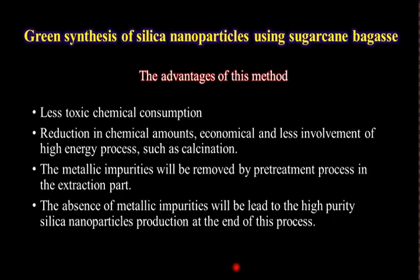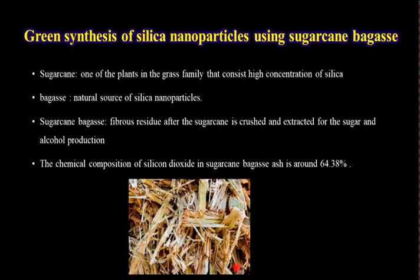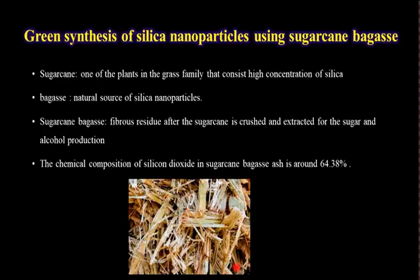The absence of metallic impurity will lead to high purity silica nanoparticles production. Sugar cane bagasse is one of the plants in the grass family that consists of a high concentration of silica, and it is chosen as a natural source of silica nanoparticles. It is a fibrous residue after the sugar cane is crushed and extracted for sugar and alcohol production. The source of silica in sugar cane bagasse comes from the main component of the soil solution, which is orthosilicic acid — a source of silica deposited in the stem and leaves. The chemical composition of silicon dioxide in sugar cane bagasse ash is around 64%.